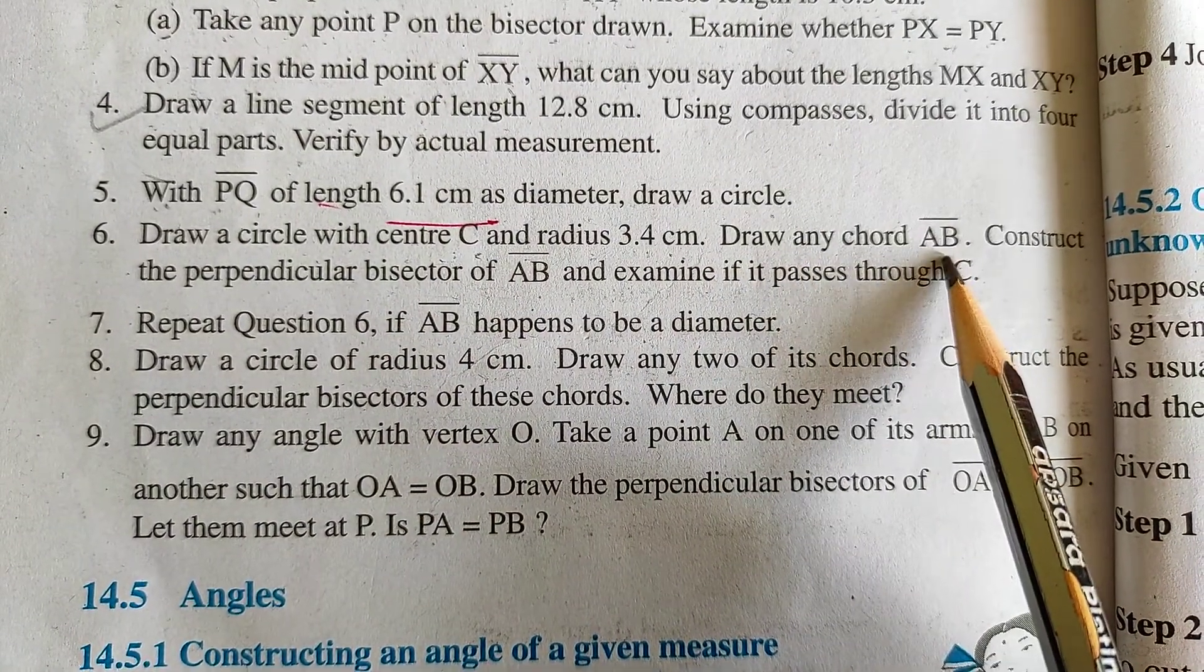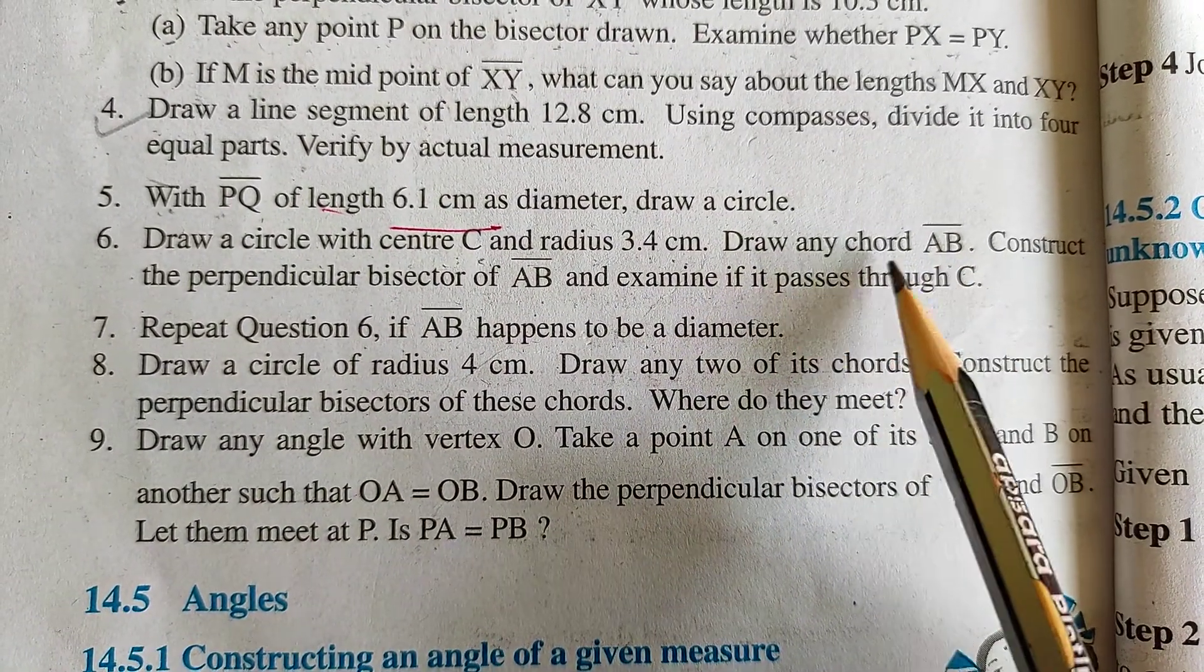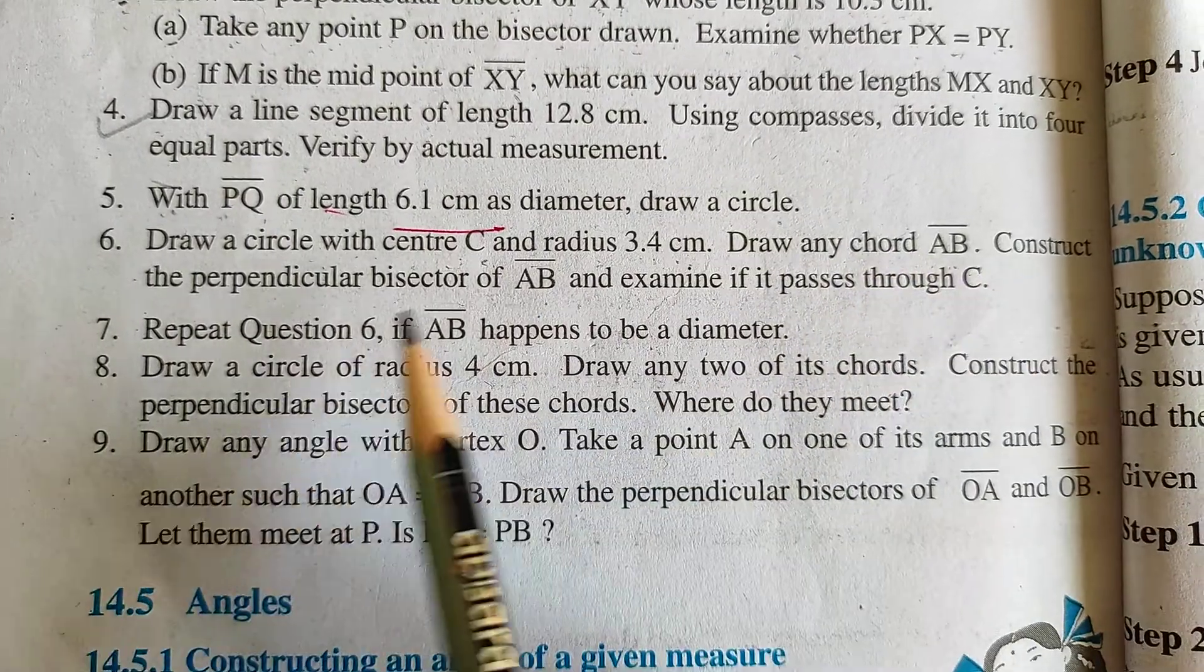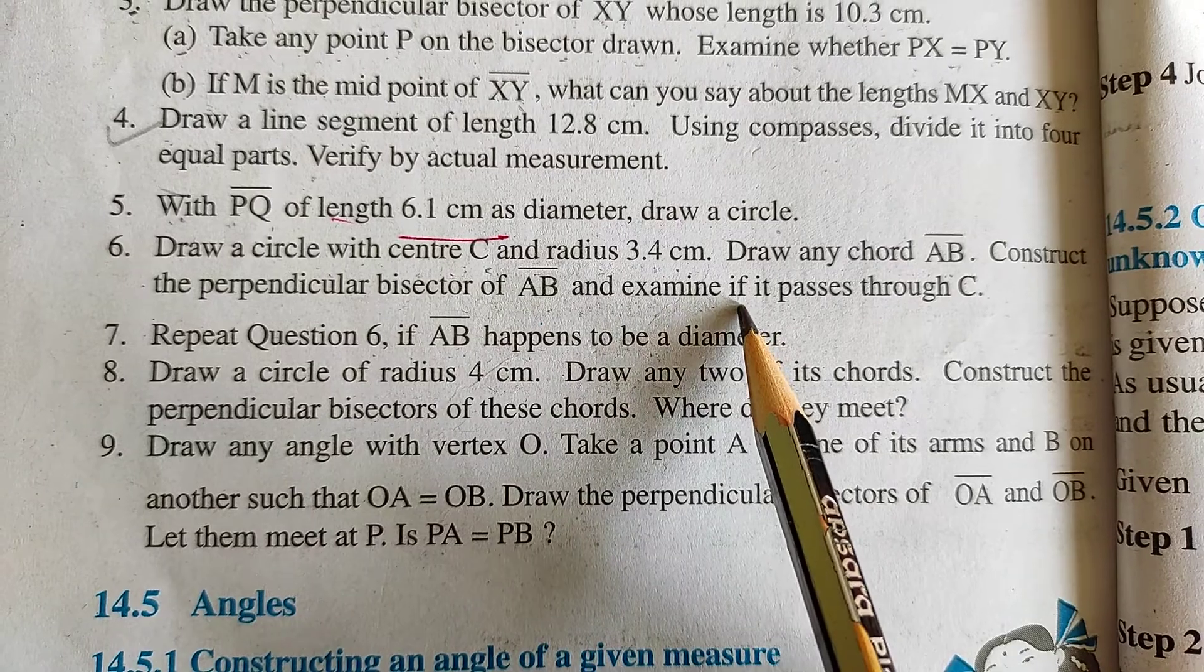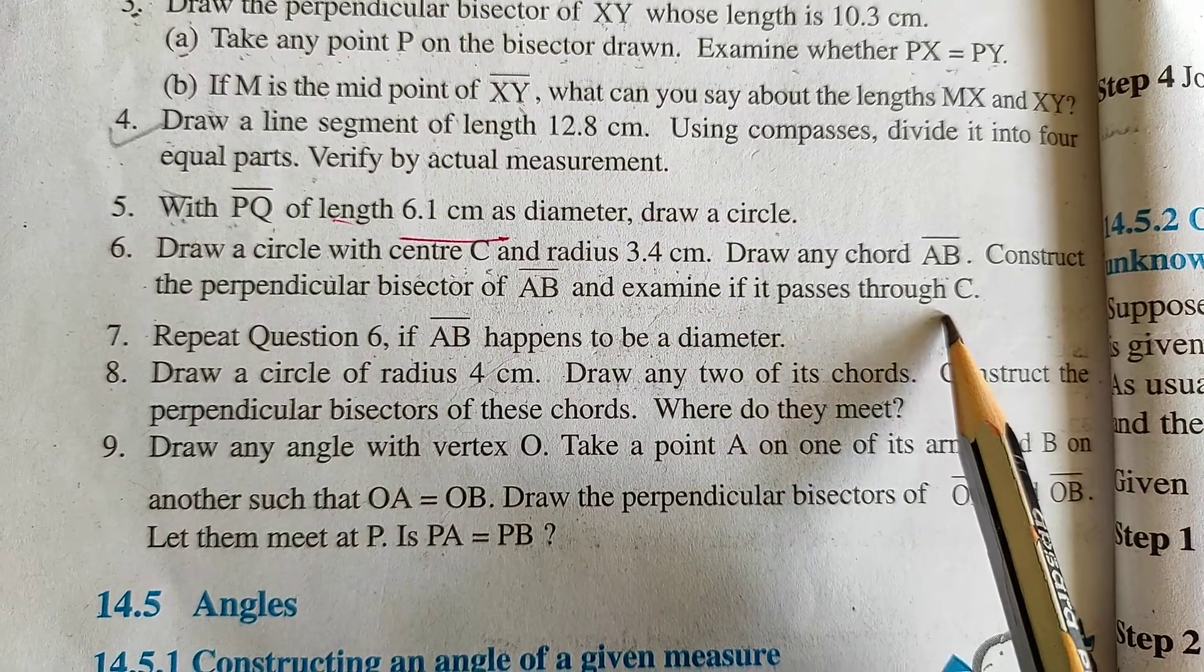Draw any chord AB. Now, you have to draw any chord AB. Construct the perpendicular bisector of AB and examine if it passes through C.